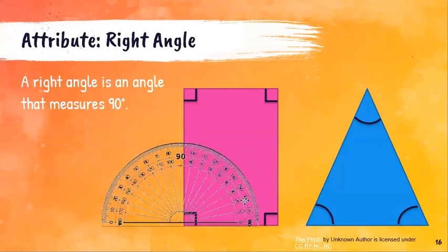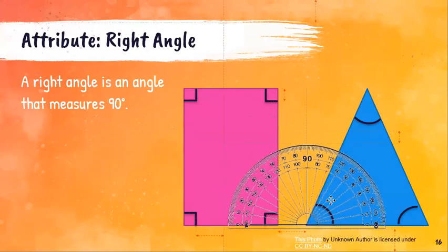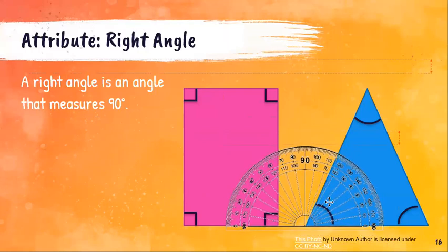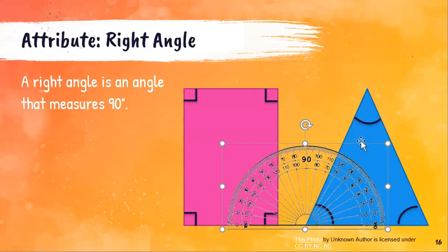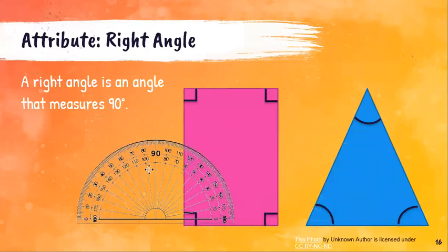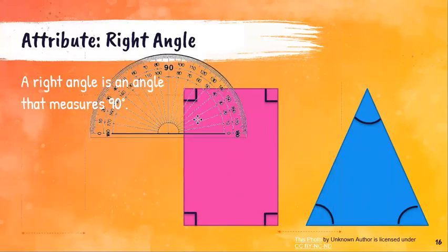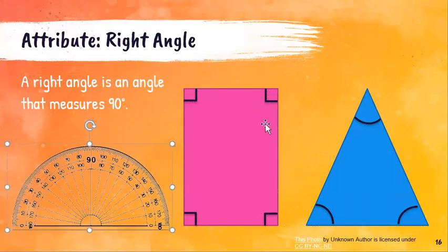If I go over here with my protractor to this triangle and line up the vertex with that point and my line along the bottom, this angle is about between 60 and 70 degrees — that's not a 90-degree angle. None of the angles in this triangle are 90 degrees; they're all going to be less than 90 degrees. This rectangle has four right angles, and I know that because these little box markers have been placed at each corner.